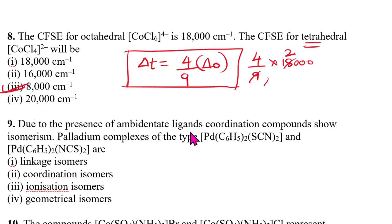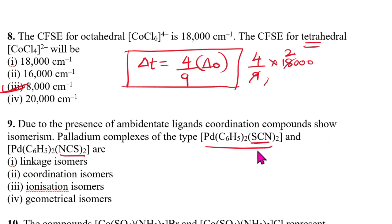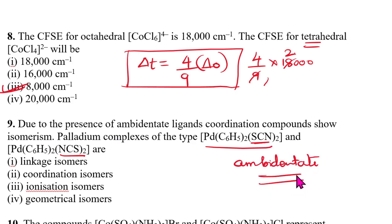Ninth question: due to the presence of ambidentate ligands, coordination compound isomerism arises. Palladium complexes of a certain type can show this. The answer is linkage isomerism — always remember, ambidentate ligands form linkage isomers.